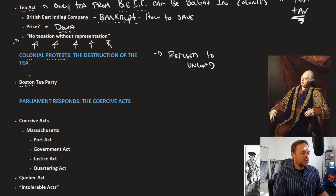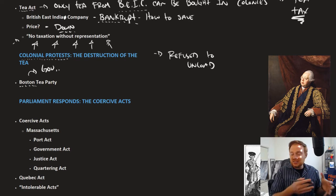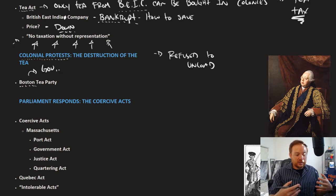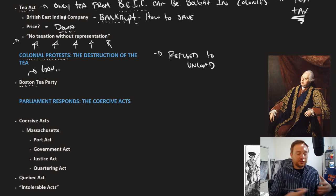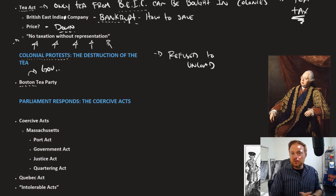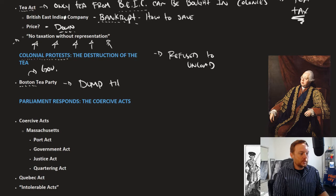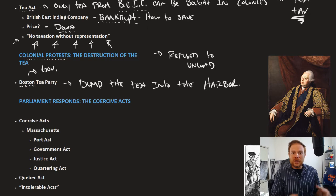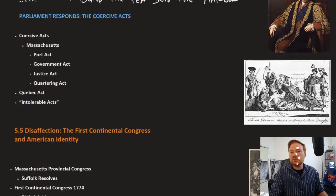In Boston it was different — the governor said that the tea was going to be unloaded no matter what; the ship couldn't leave until it was unloaded. This started a very intense debate within Boston about what to do with the ship full of tea sitting in the harbor. The colonists didn't want to unload it, the governor was adamant that it would be unloaded. So rather than unloading the tea and paying the tax, essentially what the Boston colonists did was dump the tea into the harbor. This, of course, is known as the Boston Tea Party.